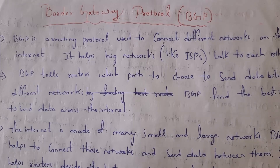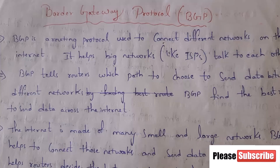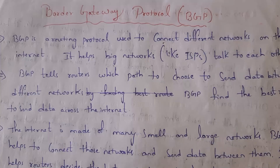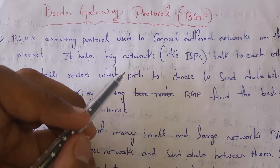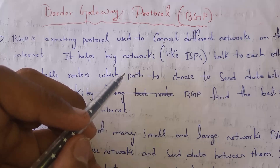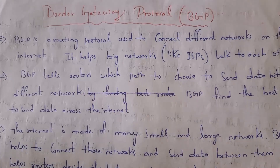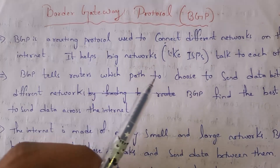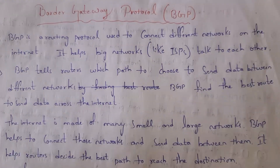For example, if I am using ACT Fibernet and my friend is using Jio, both can communicate to each other by using BGP, that is Border Gateway Protocol. So big networks — different internet service providers like ACT and Jio — can communicate to each other. BGP tells routers which route to choose to send data between different networks, helping routers choose the best route to send data across the internet.